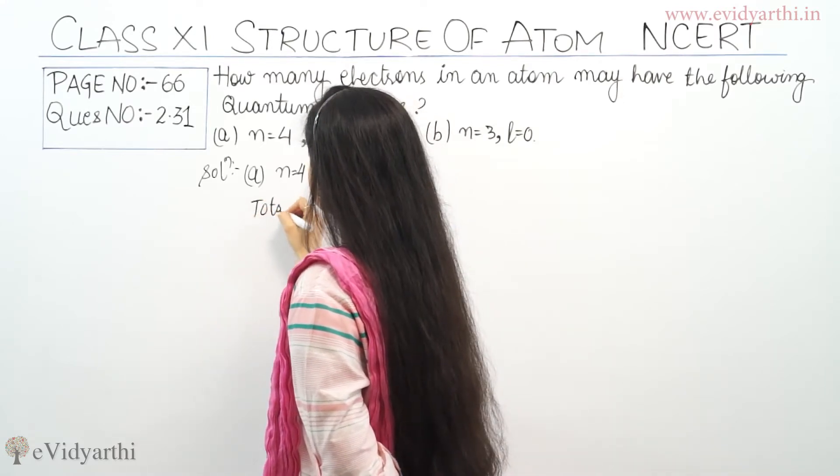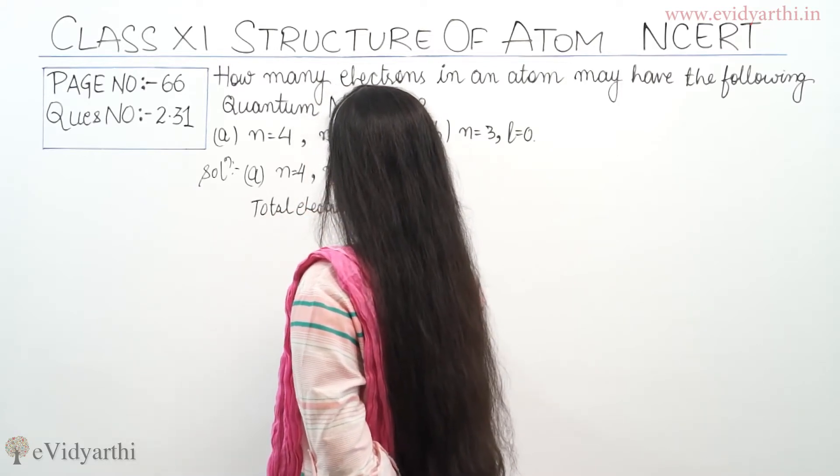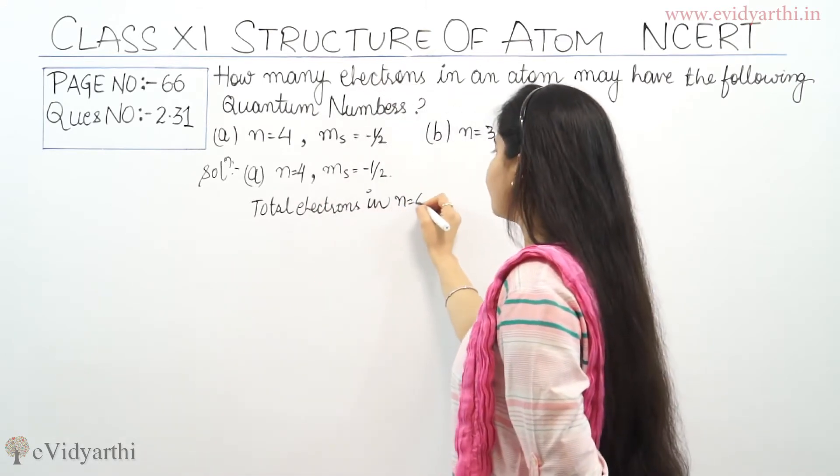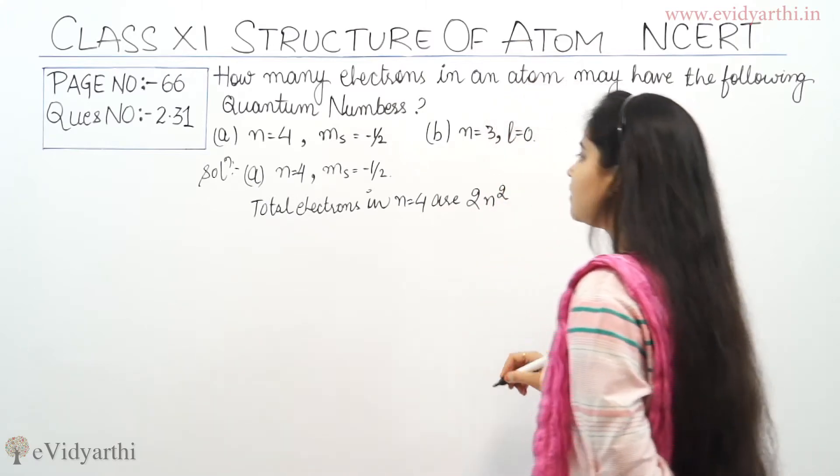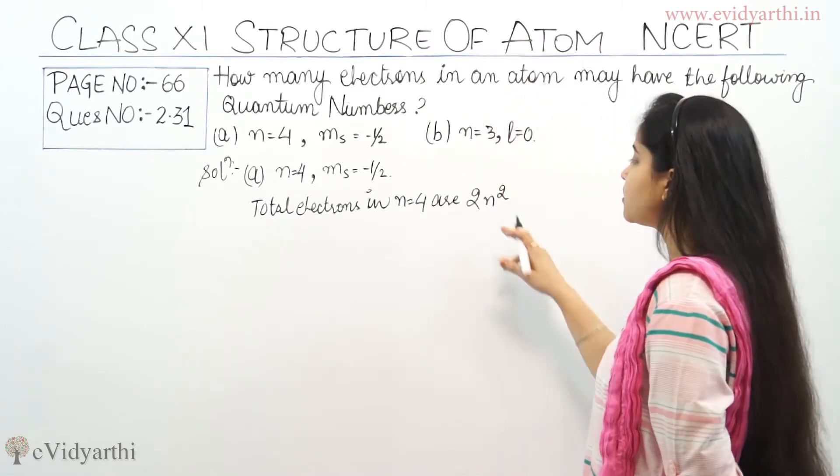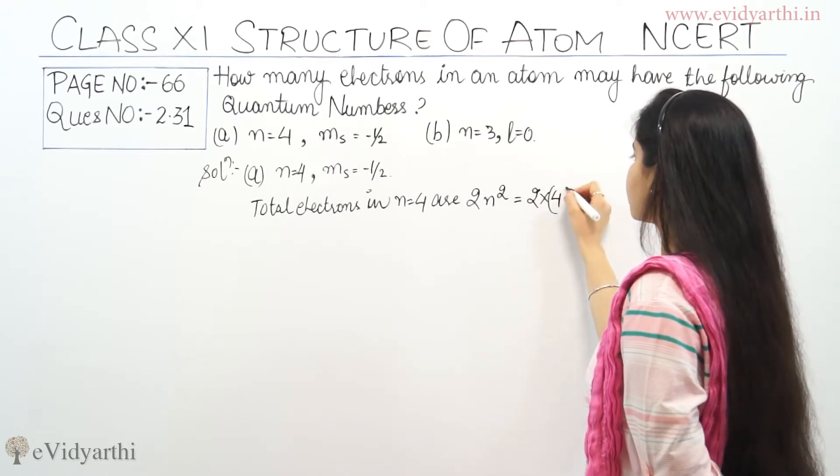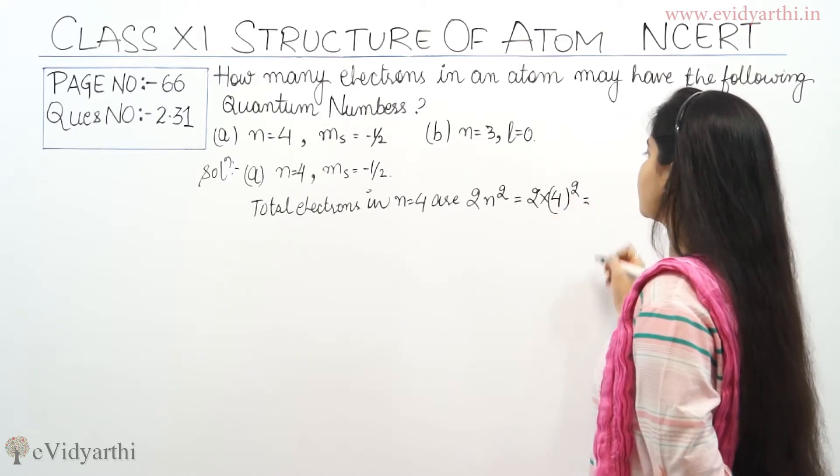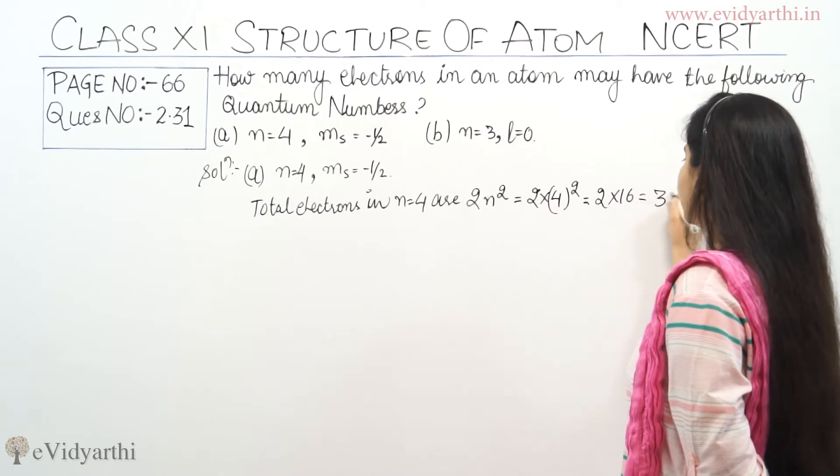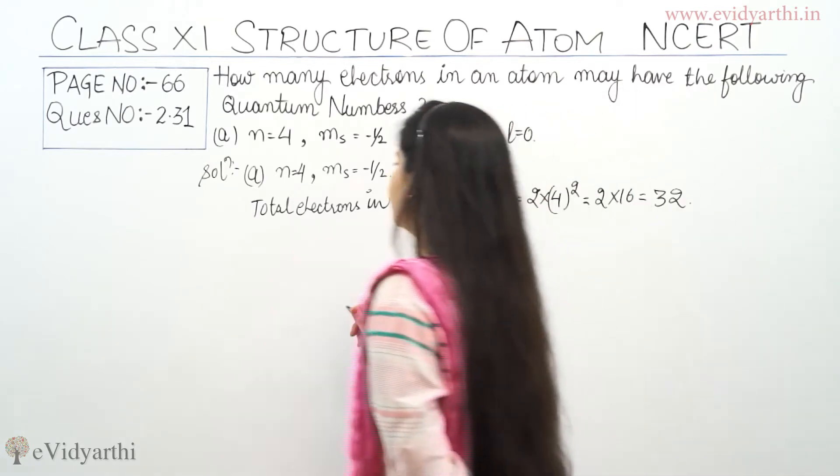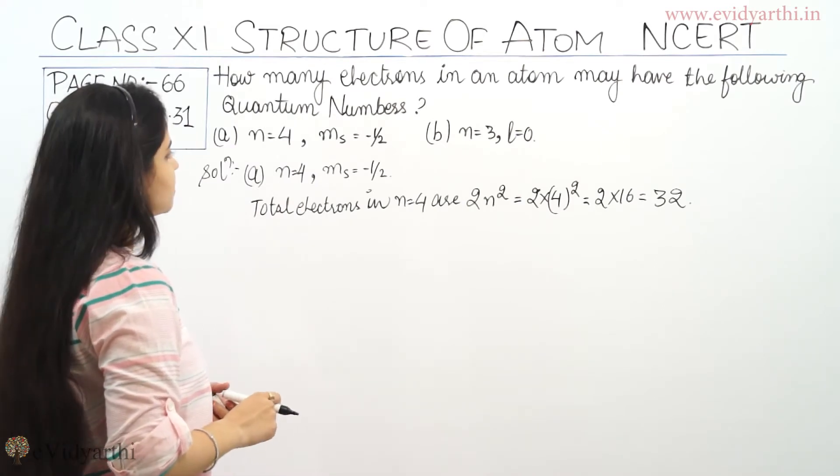Total electrons in n is equals to 4 are 2n square. The formula is 2n square, which becomes equals to 2 into 4 square, which is equals to 2 into 16 becomes equals to 32. So total electrons in n is equals to 4 are 32 electrons.